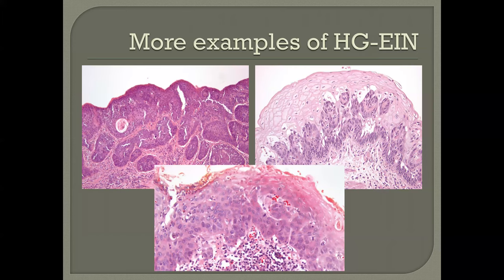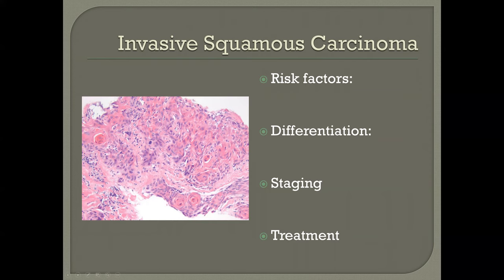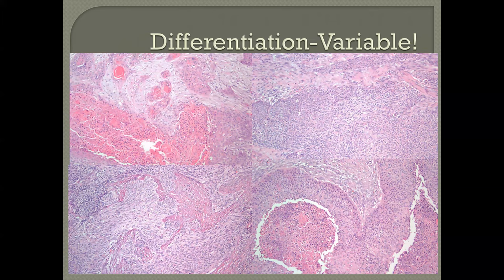That brings us to the invasive squamous lesions. We'll talk briefly about the various risk factors, differentiation issues, staging, and treatment. Differentiation can be quite variable — we can have nice keratinization, squamous pearls, no keratinization, areas of necrosis, or areas of more spindle-shaped differentiation. It can be a really mixed bag, as it is in other locations as well.